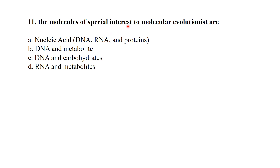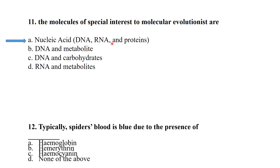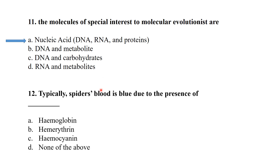The molecules of special interest to molecular evolutionists are nucleic acids — DNA, RNA — and proteins. Typically, spider blood is blue due to the presence of hemocyanin. Hemocyanin, not hemoglobin, is present in spiders.